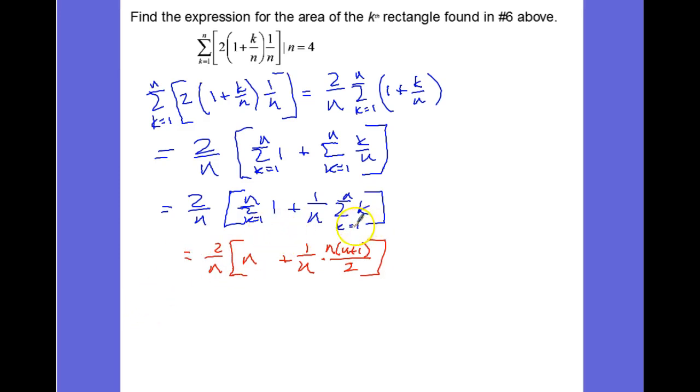If we distribute 2/n here, the n's cancel and we're left with 2. Here we have 2/n² times n times (n + 1) over 2. The 2's cancel, one of the n's cancel, and we get 2 plus (n + 1)/n.